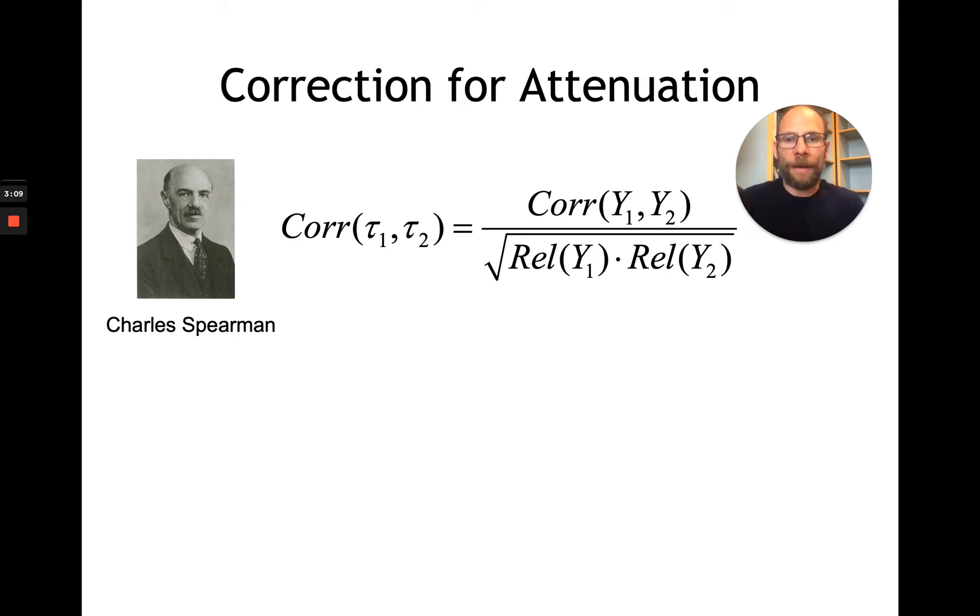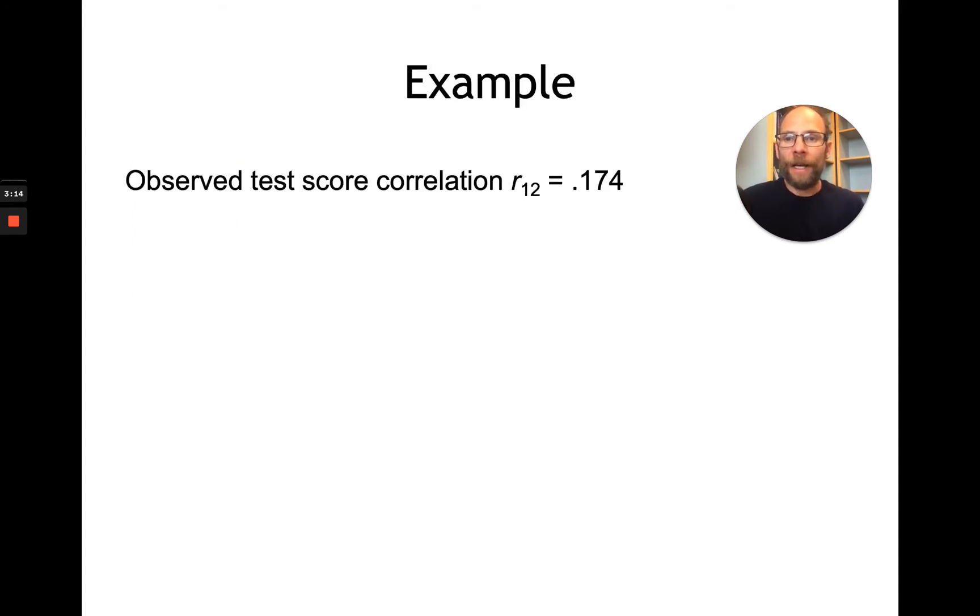I want to show you an example as well for how this works. So let's say we have an observed test score correlation between two tests or between two measurements that is 0.174. So that's our observed correlation.